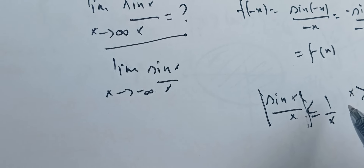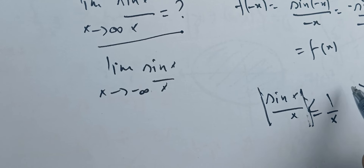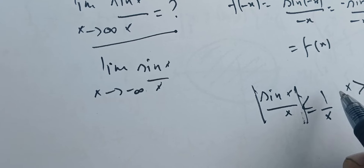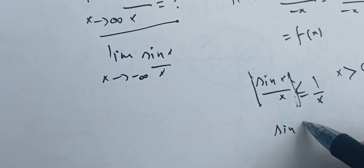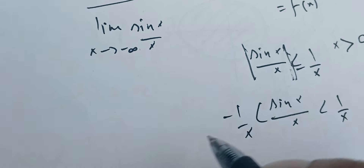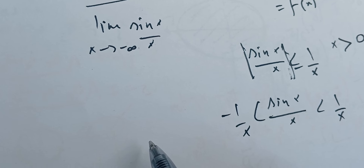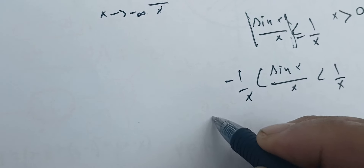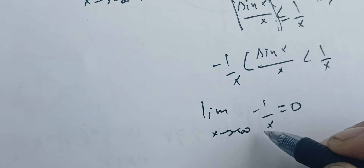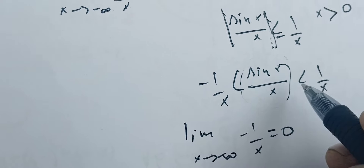This tells us that we can write it this way: sine of X over X is between minus one over X and one over X. Therefore, when we take the limit as X goes to plus infinity of one over X, that limit is zero. Since sine of X over X is trapped between minus one over X and one over X, both of which go to zero, the limit of sine of X over X as X goes to plus infinity is zero.